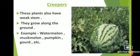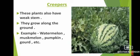The next one is creepers. These plants also have weak stems. They grow along the ground. Creepers are plants with weak, soft stems that grow along the ground. Their stems are very weak and they cannot bear the weight of their fruit. They cannot stand straight even with the help of any support, so they creep on the ground. They have big and heavy fruits. Some examples of creepers are gourd, pumpkin, watermelon and muskmelon. In the following pictures you can see the image of some creepers.